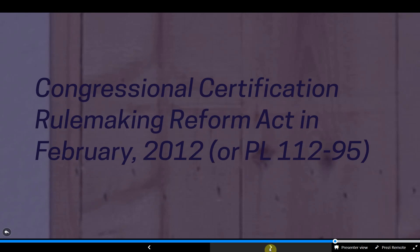The FAA recognized they weren't actually measuring anything, as would be expected when conducting a process audit, so they couldn't use the data to arrive at any meaningful conclusions about ODA program health. Because of the issues with ODA audits, Congress passed the Certification Rulemaking Reform Act in February of 2012, also known as PL 112-95. This new public law asked that the FAA assess how they were conducting oversight and look for ways to improve efficiency, specifically to find methods to enhance how designees — especially ODAs — are used in the certification process.